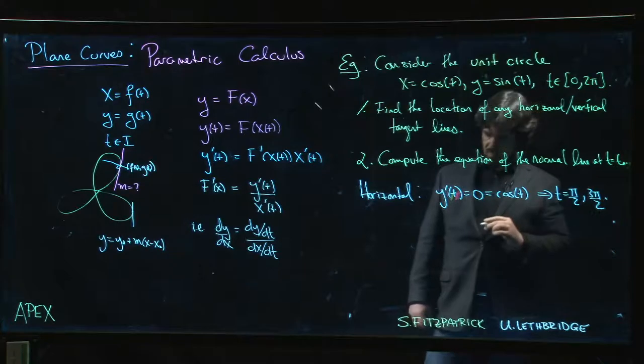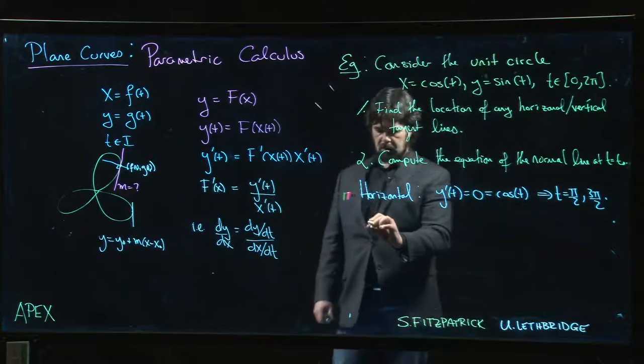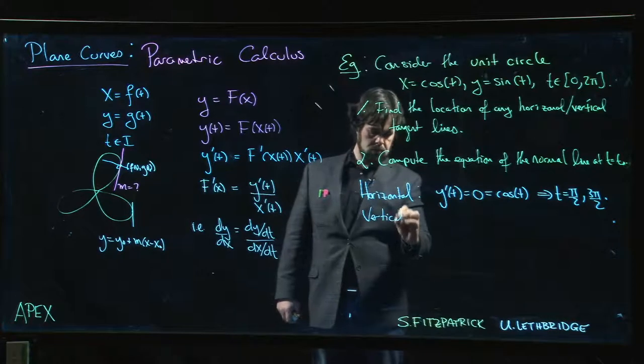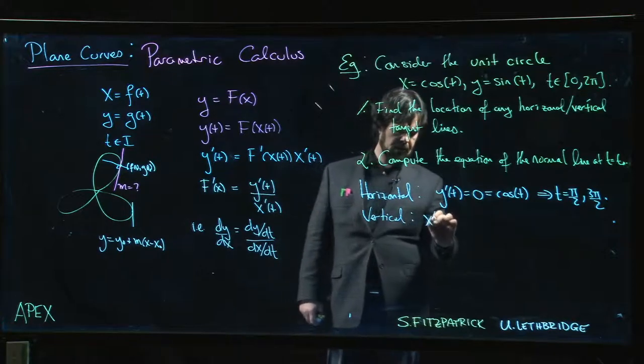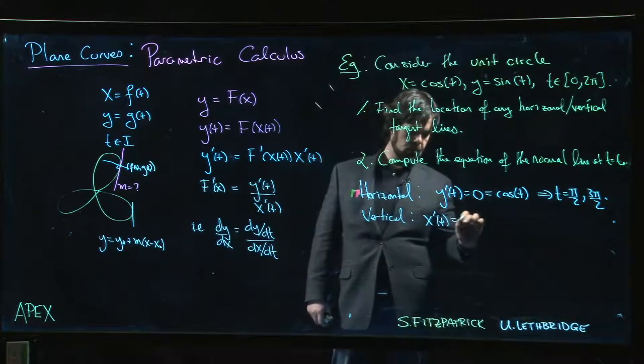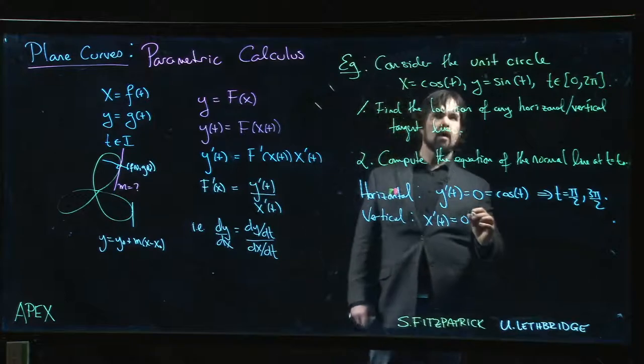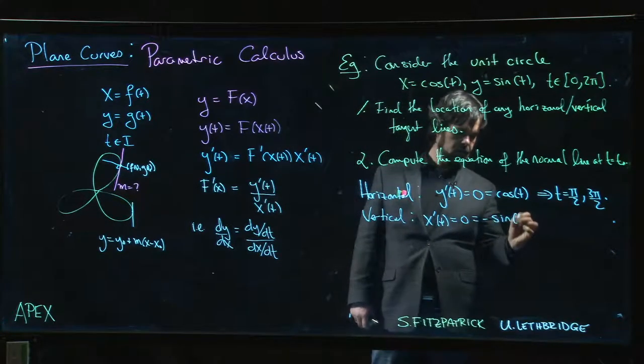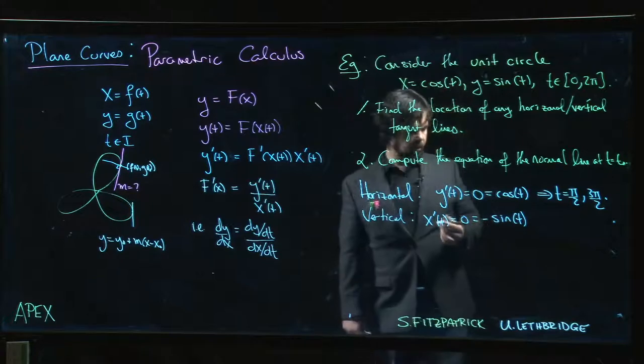For vertical tangents, we expect x'(t) to be equal to 0. x' is minus sine t, so we need sine t to be equal to 0.